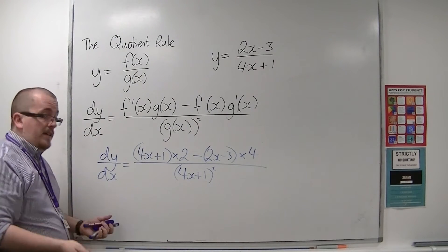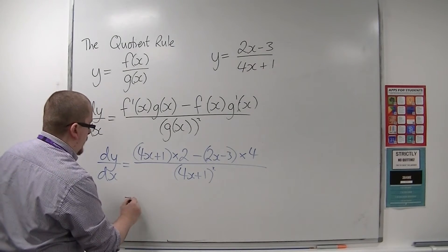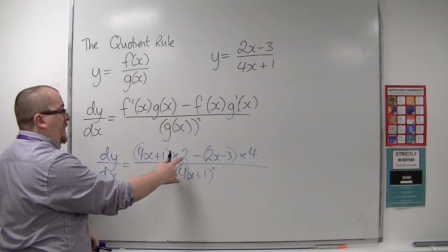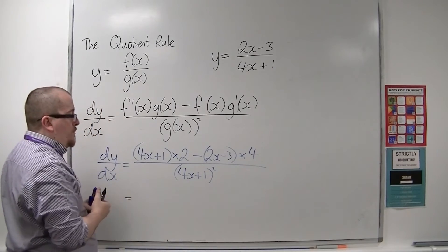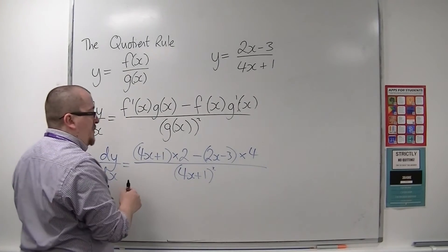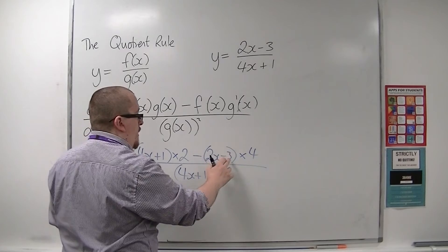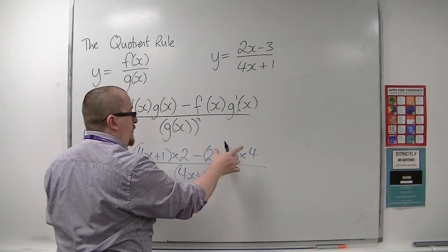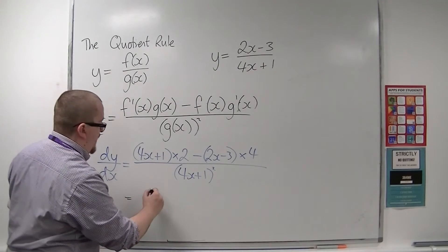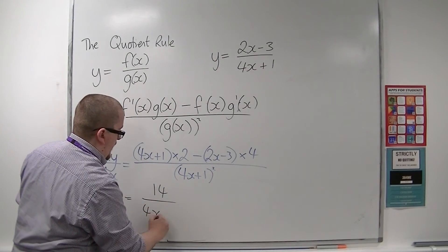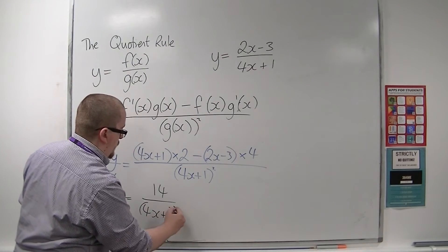So if we tidy this up, we have 4x times 2, so that's 8x. Take away another 8x, so that's 0. Then we have 1 times 2 take away minus 3 times 4, so that's plus 12. So 2 plus 12 is 14. So we have 14 over (4x plus 1) squared.